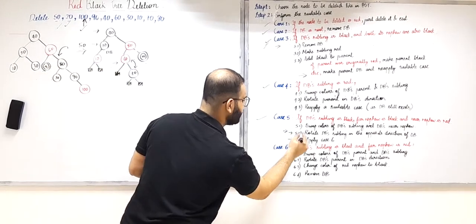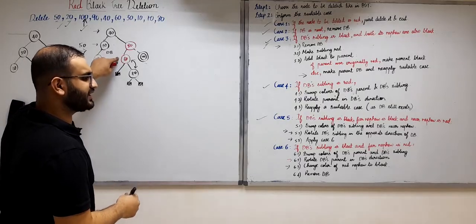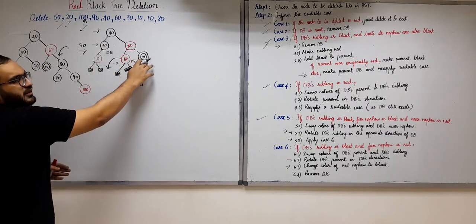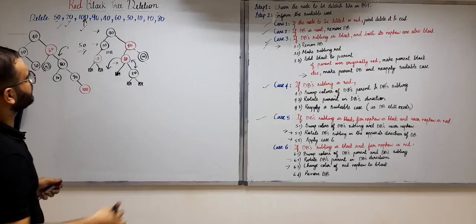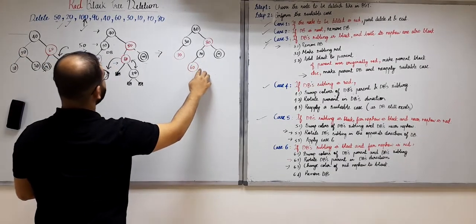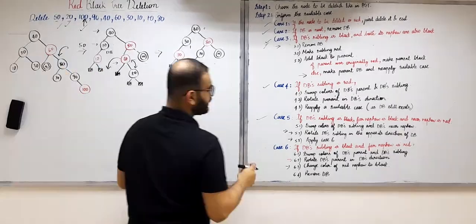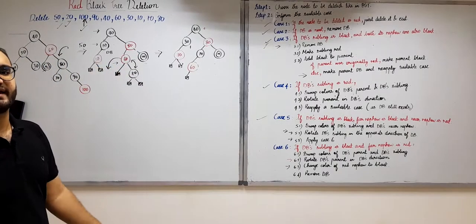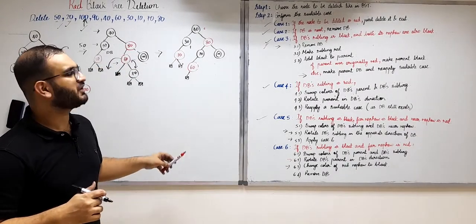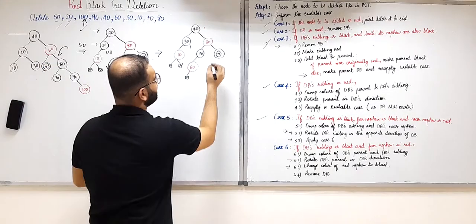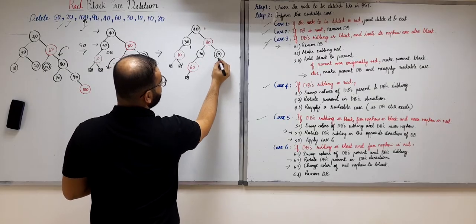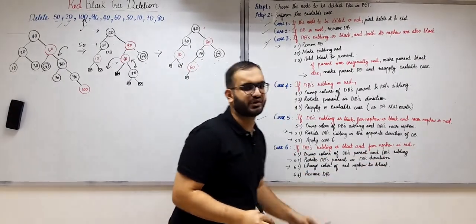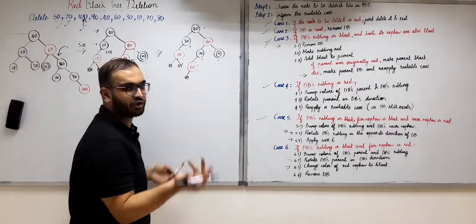After swapping colors in Case 5, we rotate the double black's sibling 60 in the opposite direction of double black. This is what we get once we rotate 60. We were doing Case 5 and now we have to apply Case 6, because the double black's sibling is now black and the far nephew is red. Every time we apply Case 5, such a situation arises that we have to apply Case 6.